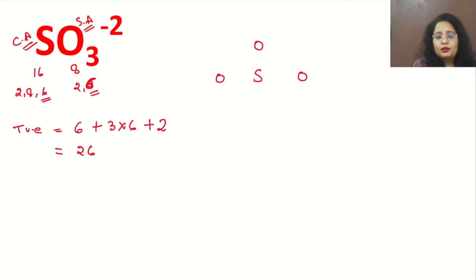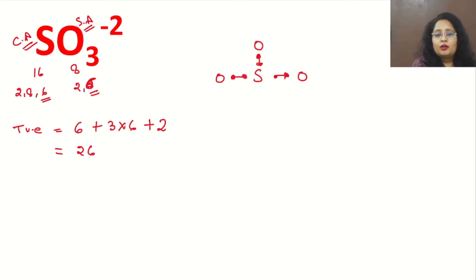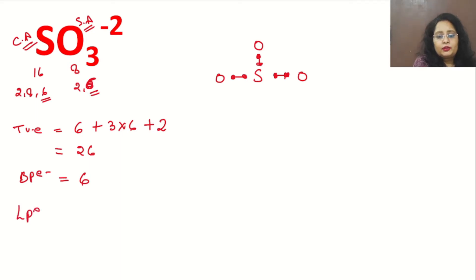First, we make single bonds between sulfur and each oxygen, using 2 electrons each — these are called bond pair electrons. With 3 single bonds, bond pair electrons = 2+2+2 = 6. Now we calculate lone pair electrons using the formula: lone pair electrons = total valence electrons − bond pair electrons = 26 − 6 = 20.